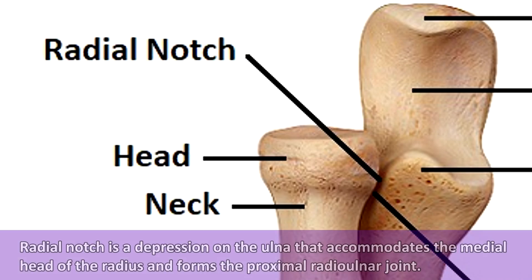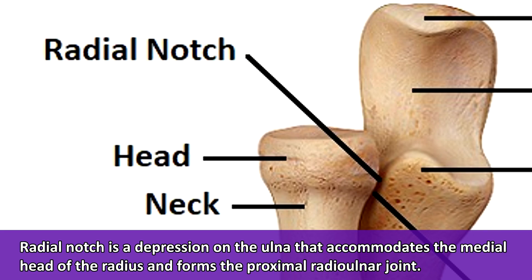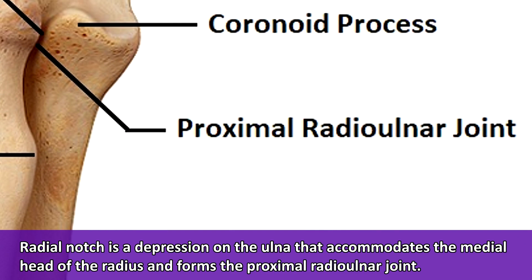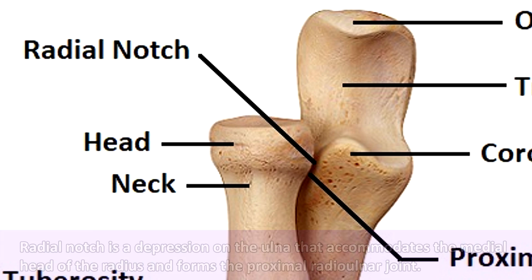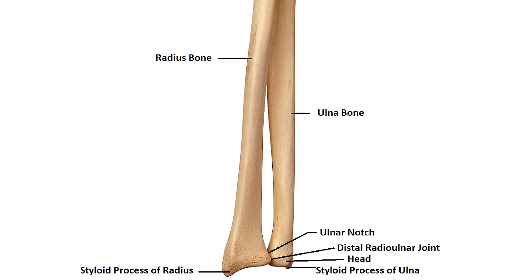Next you have the radial notch, a depression on the ulna that accommodates the medial head of the radius and forms the proximal radial ulnar joint. An important thing to remember: the names are backwards. The ulnar notch is on the radius, and the radial notch is on the ulna. That's one area where a lot of people get confused, so don't mix those up.